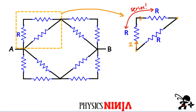I can simply simplify both of those. The equivalent resistance of this upper branch over here has to be simply R plus R, because they are in series with each other. Therefore, you're left with 2R.